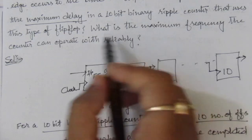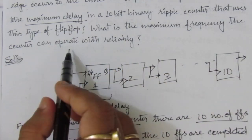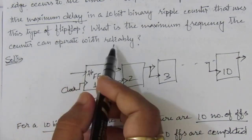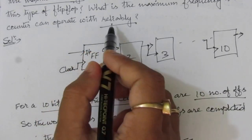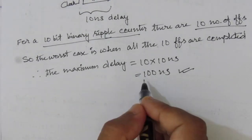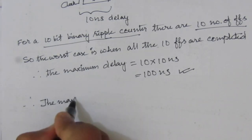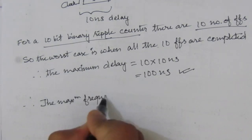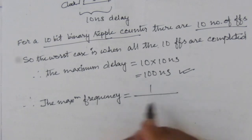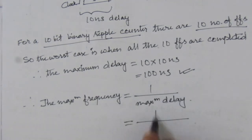Next we find the maximum frequency at which the counter can operate reliably. For reliable operation we must consider the worst case, which gives us a delay of 100 nanoseconds. Therefore, the maximum frequency equals 1 divided by the maximum delay.